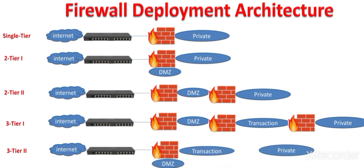In three-tier architecture type 2, we again have the same three networks, but instead of deploying two firewalls, we have only deployed a single firewall. The DMZ is providing logical protection to the transactional and private network. The DMZ is also sometimes called a screened subnet because it provides protection to the internal or private networks, screening the traffic which is going towards the private network.